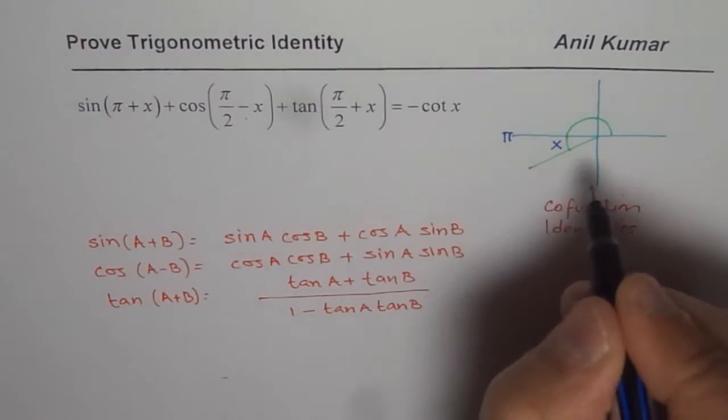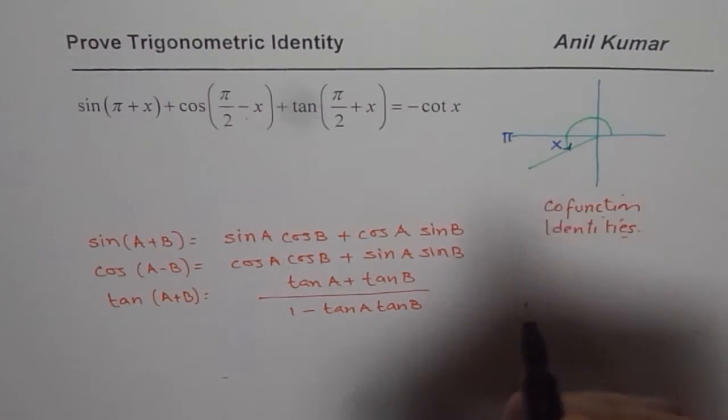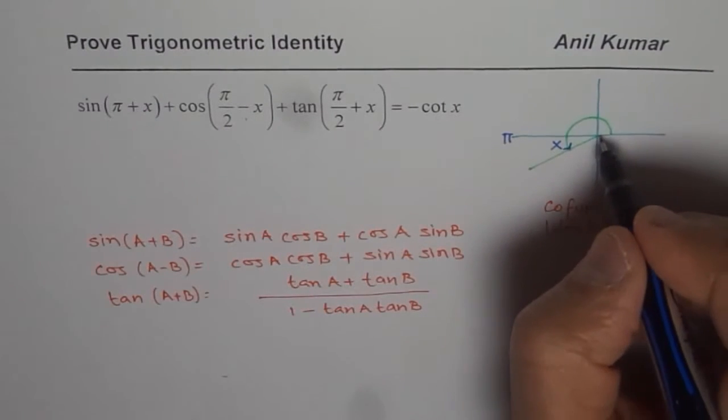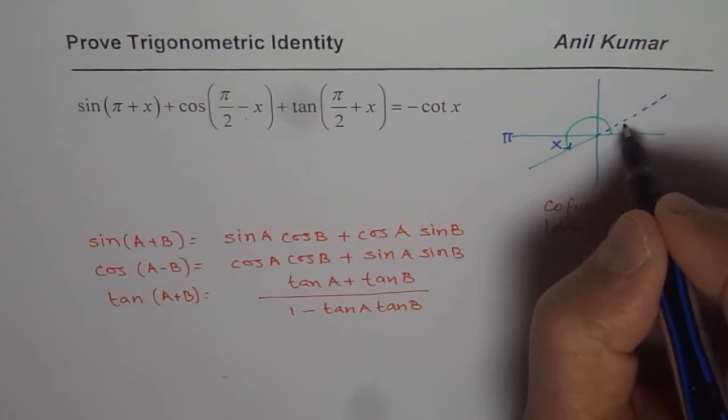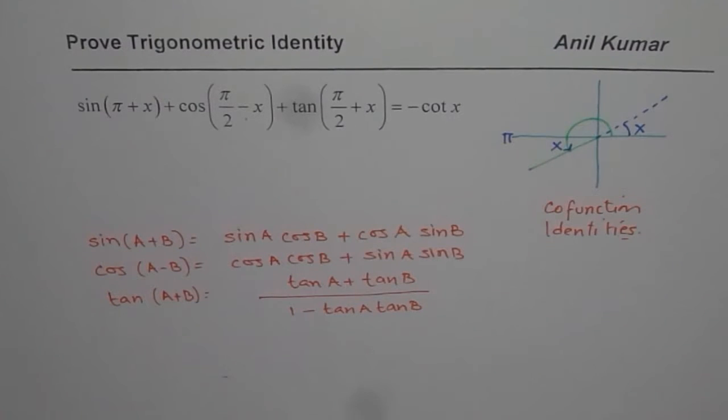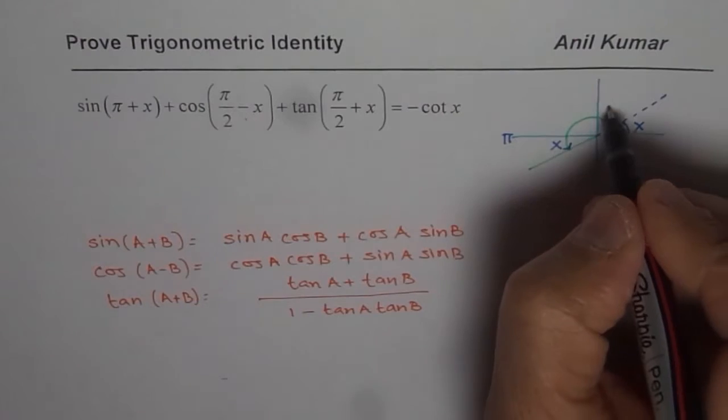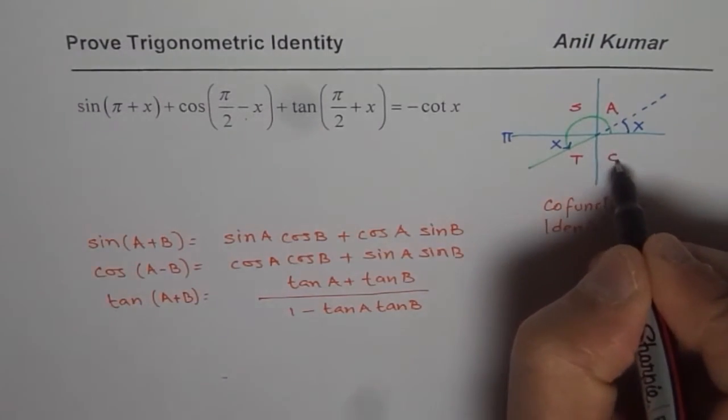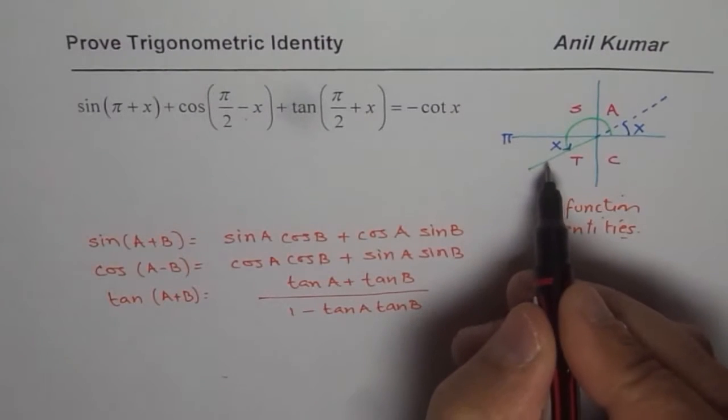Pi, this is pi for us. Pi plus x is this angle. Now, we should write this in terms of the related acute angle. So, this opposite angle is x. Now, we also know from our rule that in quadrant 1, all trigonometric ratios are positive. Sine is positive in 2, tan in 3 and cosine is 4. So, sine is negative here.